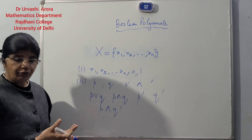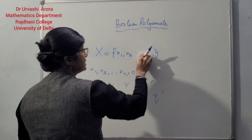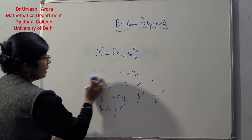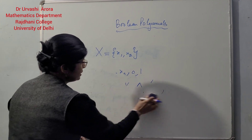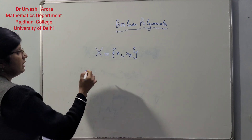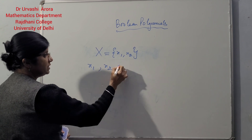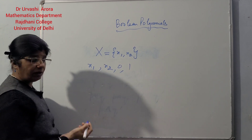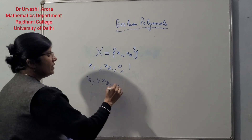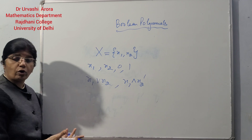In particular, if you take your set X to be a set of two symbols — say X = {x1, x2} — then examples of Boolean polynomials in this case are: x1 is a Boolean polynomial, x2 is a Boolean polynomial, 0 is a Boolean polynomial, 1 is a Boolean polynomial, x1 join x2 is a Boolean polynomial, x1 meet x2 dash is a Boolean polynomial, and so on.